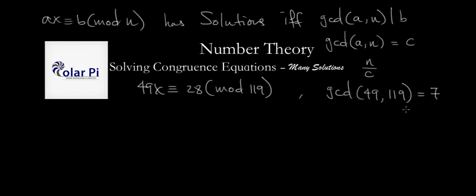But I know the GCD of 49 and 119 is 7, because I know that 49 factors is 7 times 7, and then 119 factors is 17 times 7. And so I know that, yeah, I know.